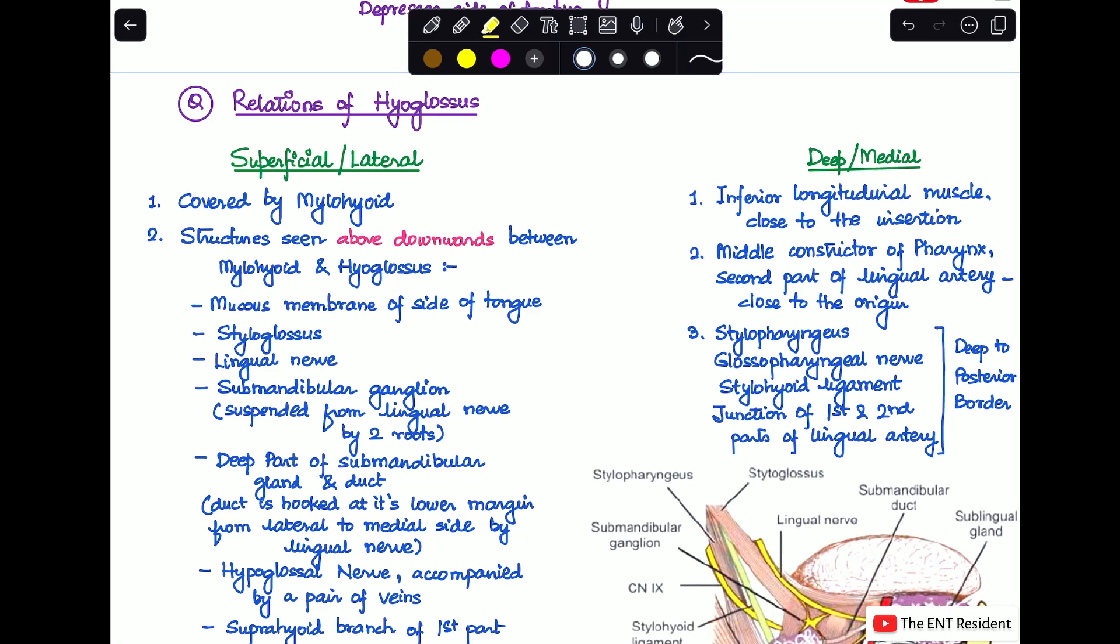Now we'll talk about a very important question: the relations of hyoglossus muscle. This in itself can be a short question in your theory papers in anatomy, and even it can be a question that can be asked in your viva in case you have got a case that is related to the tongue.